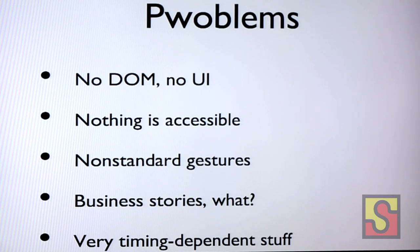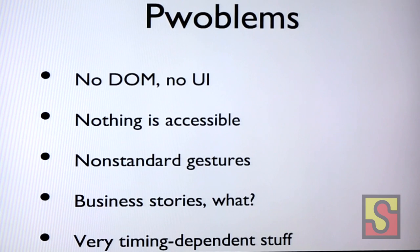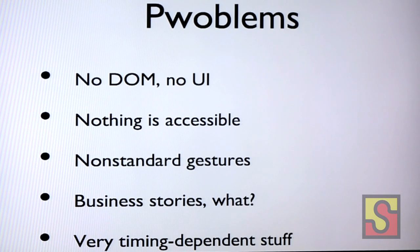There are several problems with game development testing. You don't have UI elements — no text boxes to look at or switches to click. The whole thing is done inside one OpenGL view. Nothing is accessible, there's no accessibility support, there are non-standard gestures used in games, business stories are hard to define, and there's timing-dependent behavior.